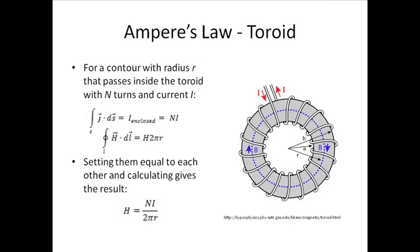And now we'll look at Ampere's law in a toroid. For a contour with radius r that passes inside the toroid with n turns and current I, the integral of J dot ds is equal to the current enclosed, which is equal to the number of turns of coil times the current flowing through the coil.